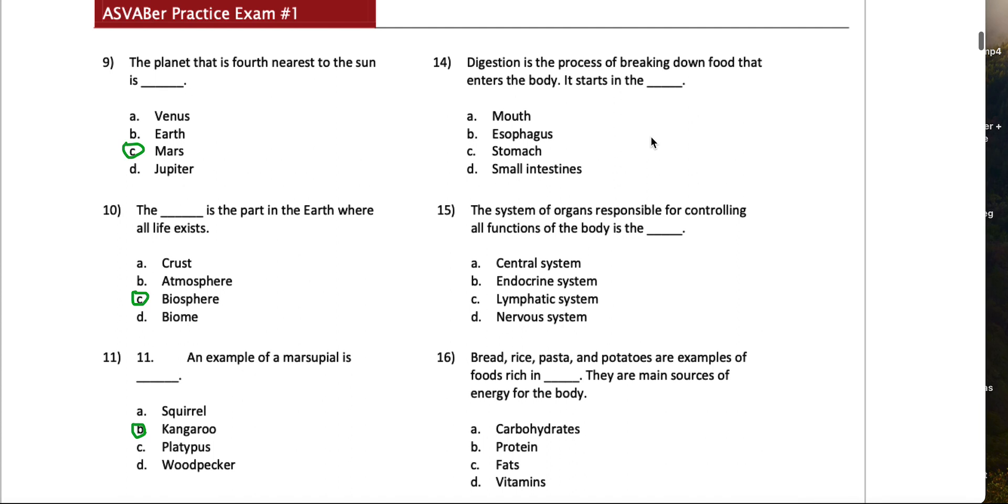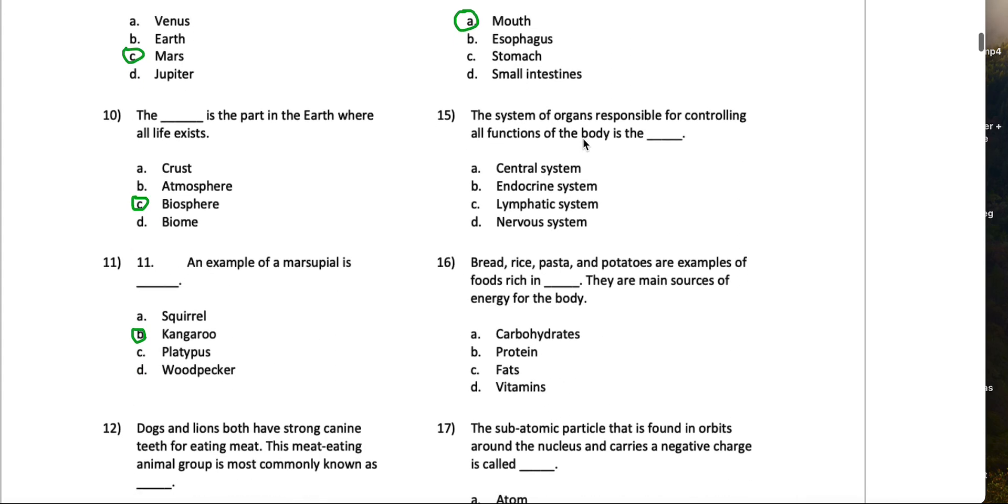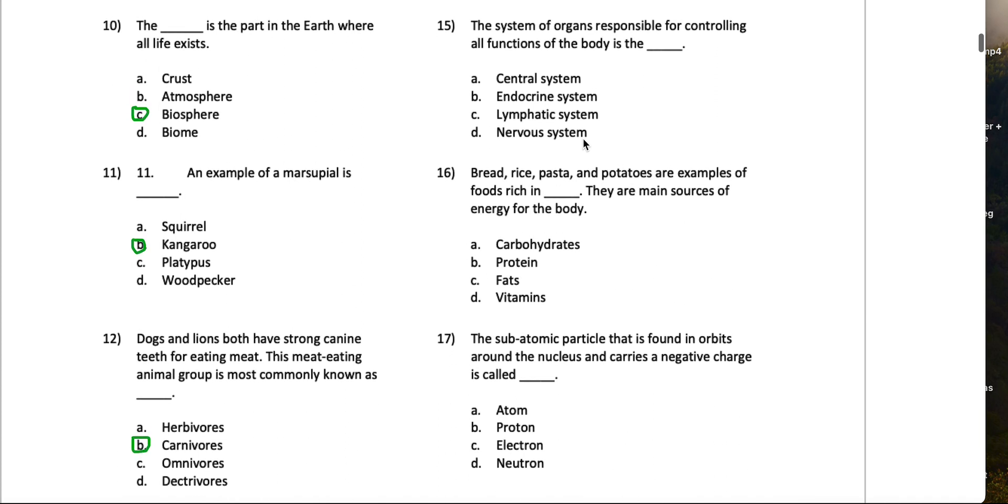Number 14, digestion is the process of breaking down food that enters the body. It starts in the blank. I'd say digestion... I mean, mostly when we think about digestion we think about the small intestines and the large intestines, but if we really think about it, digestion really begins in the mouth from chewing and all the saliva engulfing the food. So I'd say the mouth. The system of organs responsible for controlling all functions of the body is the blank: central system, endocrine system, lymphatic system, nervous system. I'd say the nervous system.